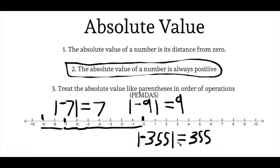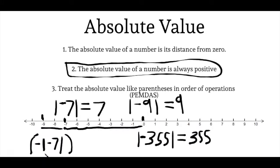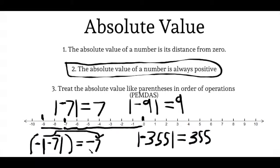Now what if we have a negative sign outside the absolute value — for example, negative times the absolute value of negative seven? The negative sign out front of the absolute value is still going to be there. The absolute value of negative seven is seven, but since that negative sign is out front of the bars, the answer is negative seven. The absolute value of negative seven is still seven, but the negative sign comes from being outside the absolute value.